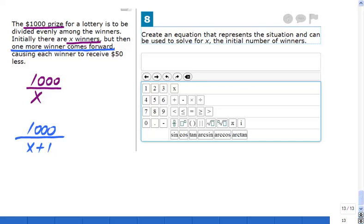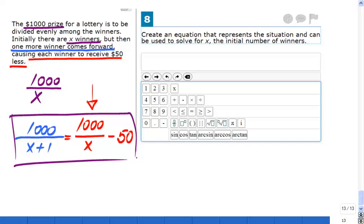Now, they're telling me that after the last winner showed up, each winner will receive $50 less. So basically, the award for all the X plus one winners, which is $1,000 over X plus one, is pretty much the same as the initial one without $50. Because whatever they were receiving initially, $1,000 over X, was decreased by $50 after the whole $1,000 amount was divided by X plus one. And this is your equation here. This is the equation that you can use to answer this question.